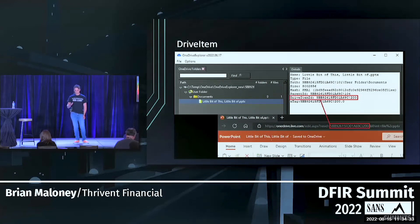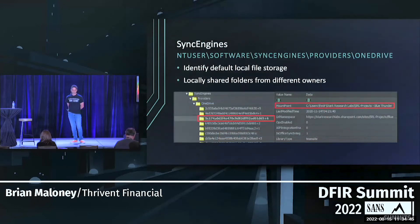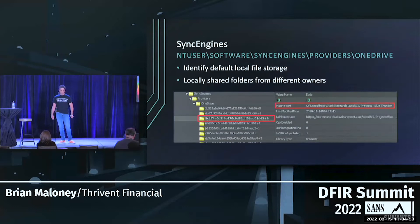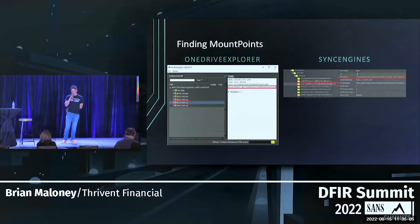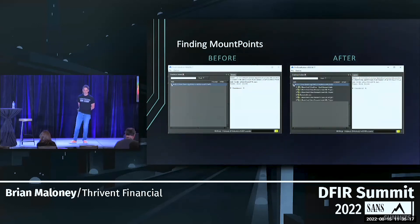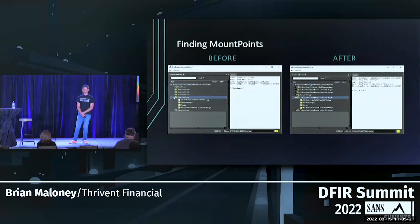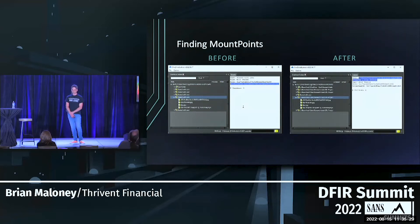Instead of looking at the Tenants key, I'm going to look at the sync engines. This identifies the default local file storage and shows what's shared with the user from different owners. If you notice, the key name actually matches up with the drive item ID. So if we take this data, we can find the mount points in OneDrive Explorer. On the left is the original data that we parsed. If we add in the user's registry keys, now we have the actual folder locations on the endpoint.